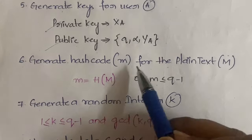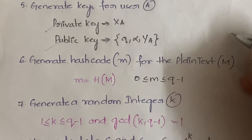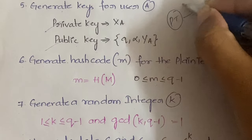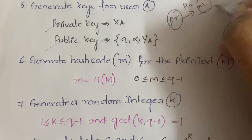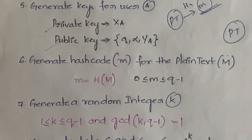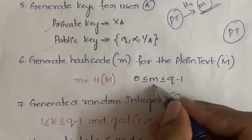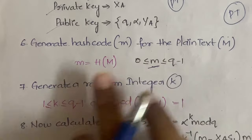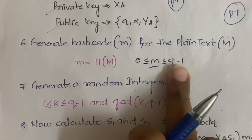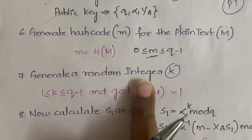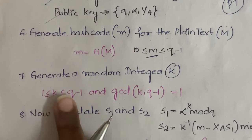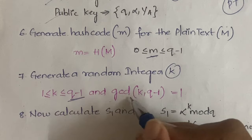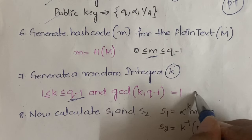Next, you need to generate a hash code for the plain text m. We apply hashing to the plain text to get the hash code, but here we directly assume a value. That hash code must lie between 0 and q minus 1. Then, generate a random integer k such that 1 ≤ k ≤ q minus 1.